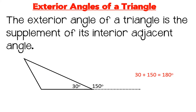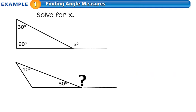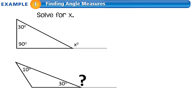Let's take a look at a couple of examples. Solve for x. x is an exterior angle — an outside angle. Remember, an outside angle is equal to the sum of the two opposite interior angles. So that means x would be equal to 30 plus 90.